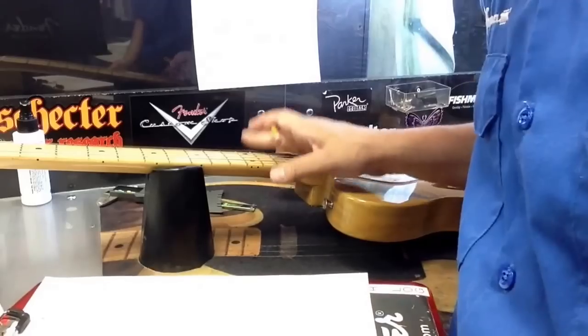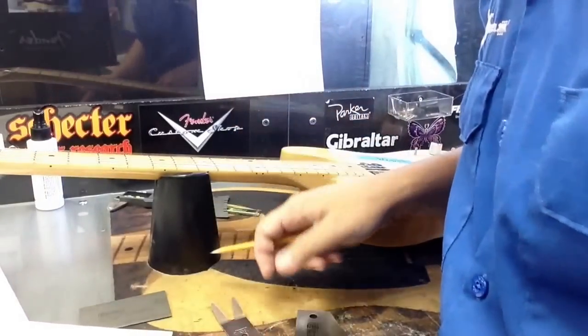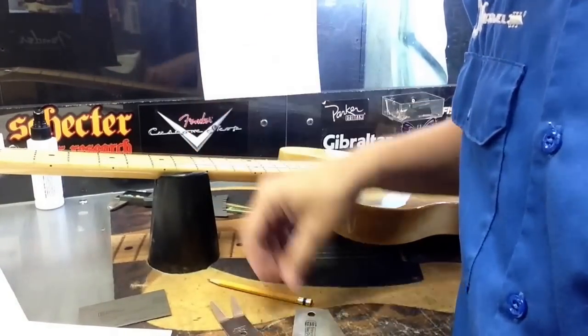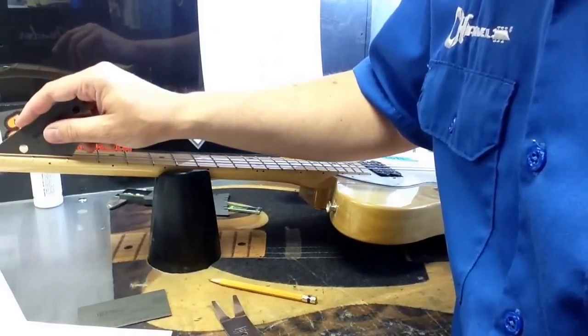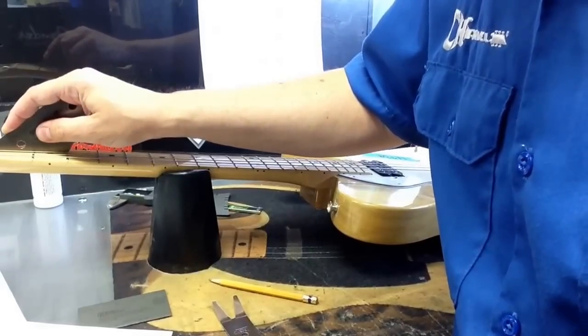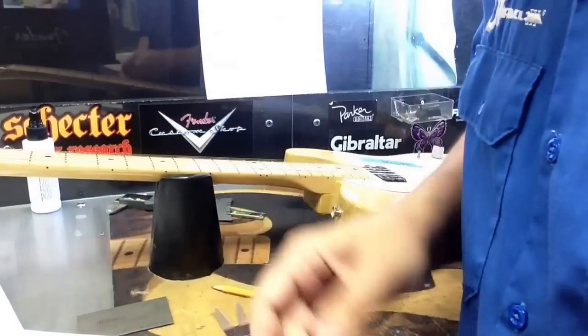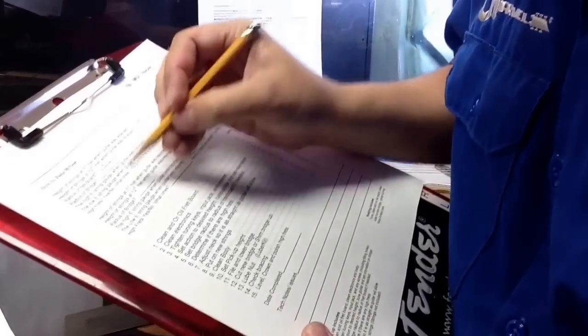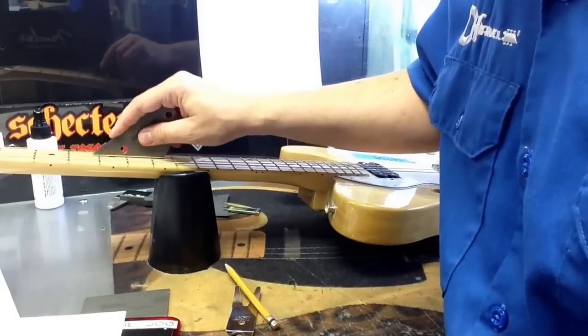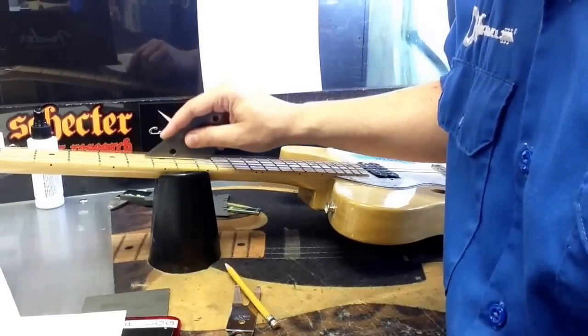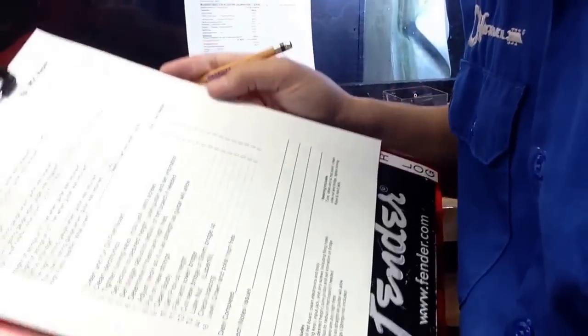Next, we're going to find out if there are any high frets, because when we lower the action, if any of the frets are high, the guitar will buzz. We'll use what's called a fret rocker and go through three sections - the treble side, the bass side, and the center. If you hear that sound, that's because the fret rocker is rocking on the second fret, which means the second fret is slightly high. On our sheet, we'll circle that there are high frets. We'll then go across all of the frets, and number eight is also high, so we'll circle that one.